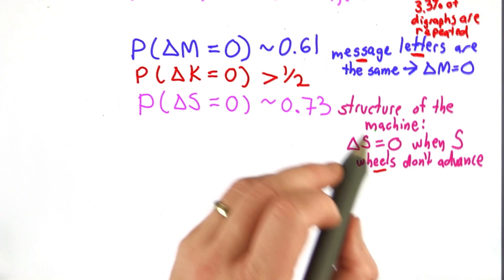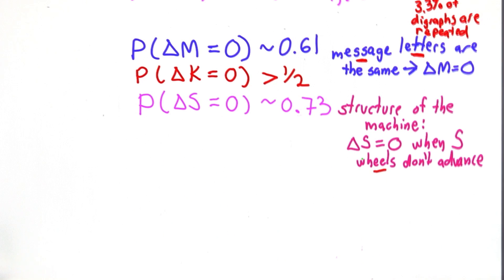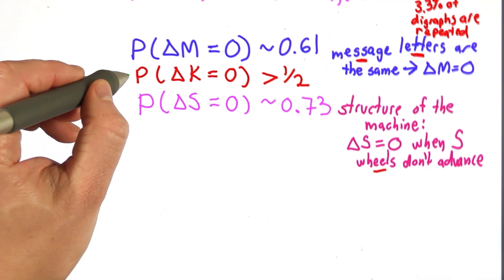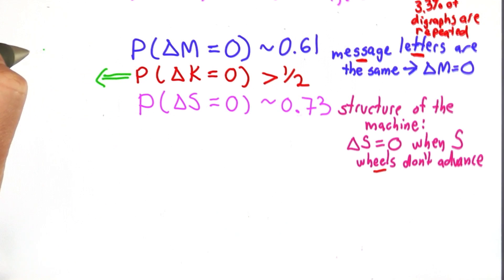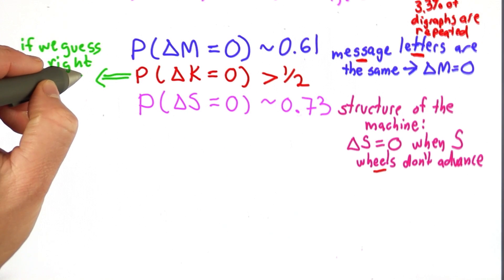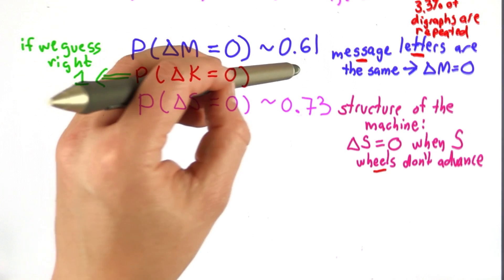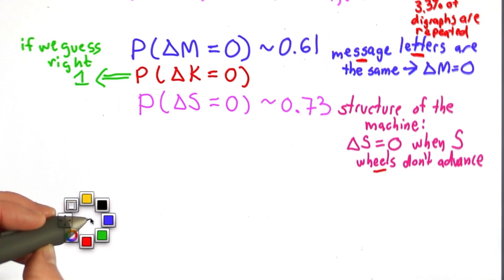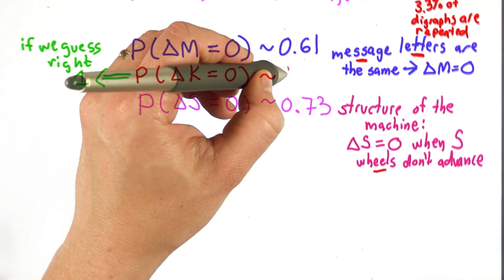Only when the M wheels are on a 1 do the S wheels advance. And so now we've said if we guess right, that means the probability that the key bits are 0 goes to 1. It'll be 1 when we guess right. When we don't guess right, it'll be 1 half.